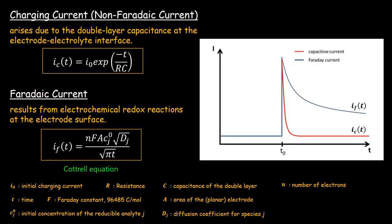Till now we talked about the qualitative Faradaic and Non-Faradaic processes, the physics behind the process, why it happens and how it happens. Now we will talk a little bit about the quantitative nature of the current — specifically, how the charging current depends on time.